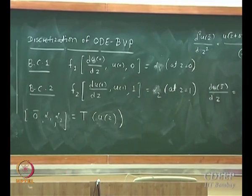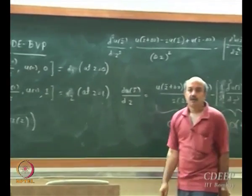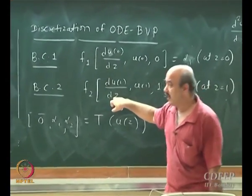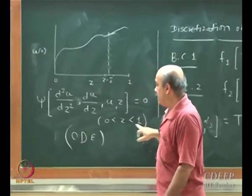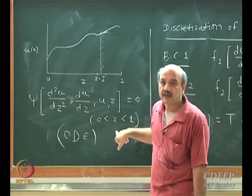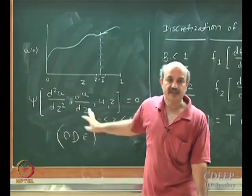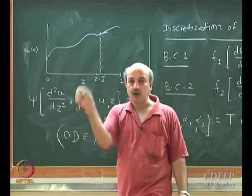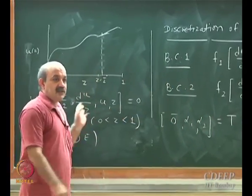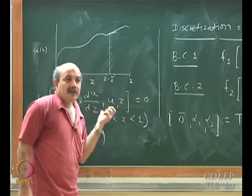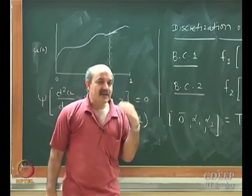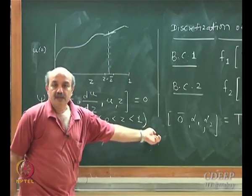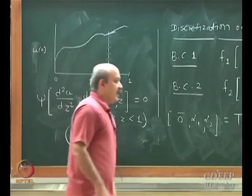I am going to use Taylor series derivative approximations. The problem is: where do I use them? Derivatives are required at the boundary points and everywhere inside the domain. At how many points should this differential equation hold? At every point — there are infinite points between 0 and 1. When solving numerically, I cannot formulate the differential equation at every point.